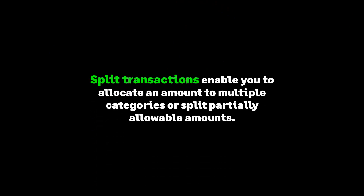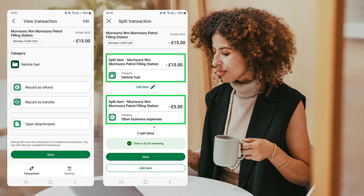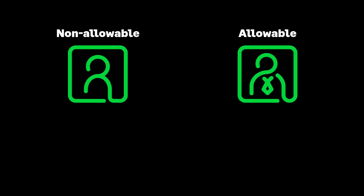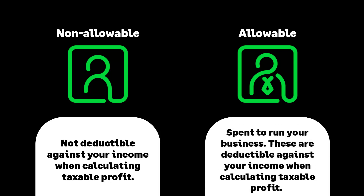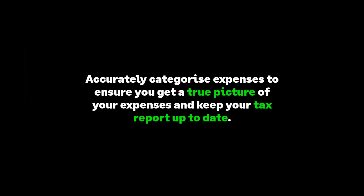Before saving your transaction, you can split it into several categories. Split transactions allow you to divide a transaction amount across more than one category. For example, if you purchased petrol for both travel and personal purposes, you could split this into two categories and make part of the amount a non-allowable expense. Non-allowable expenses — also known as disallowable expenses — are not deductible against your income when calculating taxable profit. Allowable expenses are those spent to run your business and are deductible against your income.